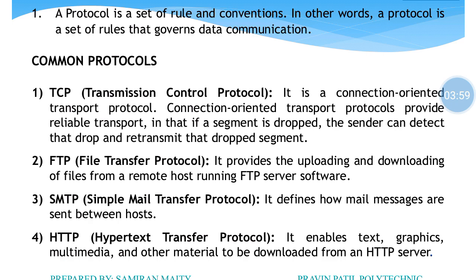Why is TCP reliable? For example, if there are four messages that need to be sent from sender to receiver, and one packet or one message has been lost or dropped — the information about this lost packet will be received by the sender. What the sender will do is send that lost packet again. In this sense, reliability is maintained.